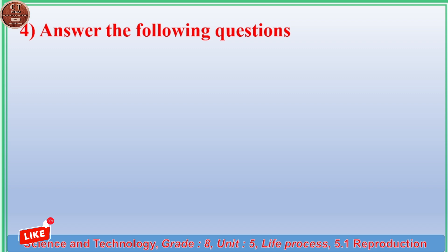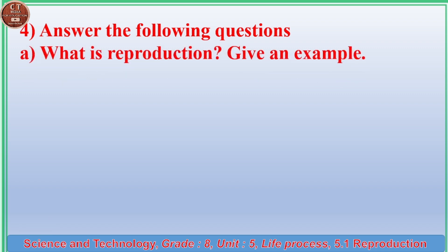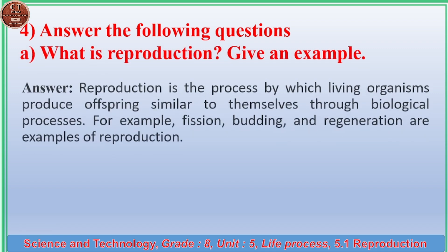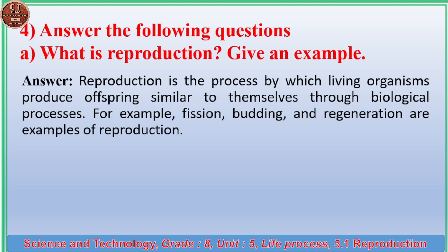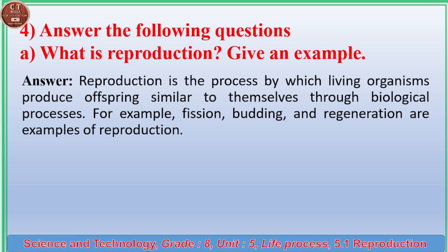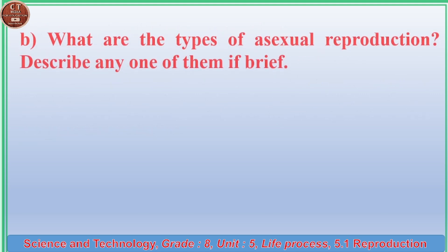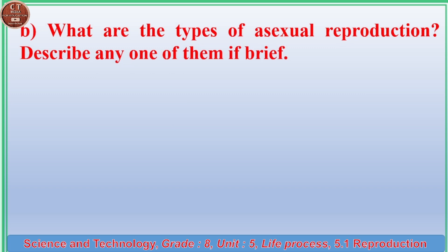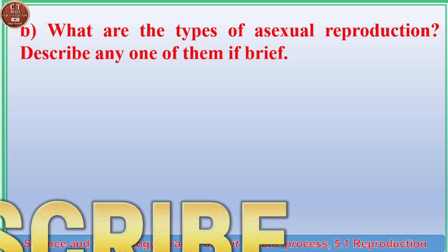Exercise 4, Answer the following: (a) What is reproduction? Give an example. Answer: Reproduction is the process by which living organisms produce offspring similar to themselves through biological processes. For example, fission, budding, and regeneration are examples of reproduction. (b) What are the types of asexual reproduction? Describe any one of them.